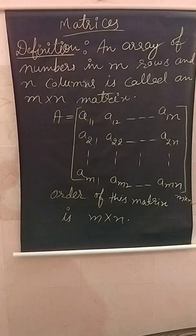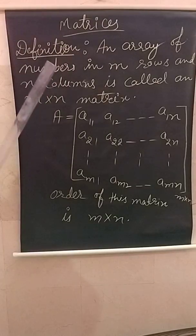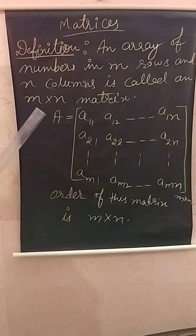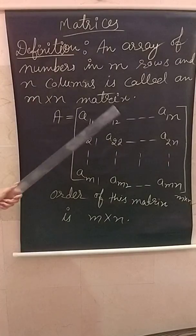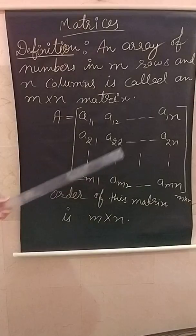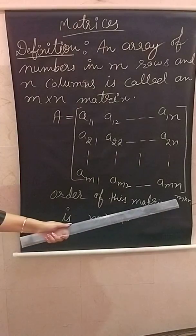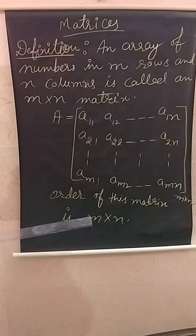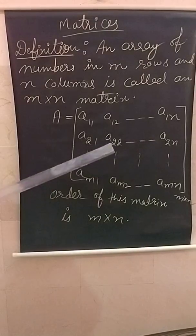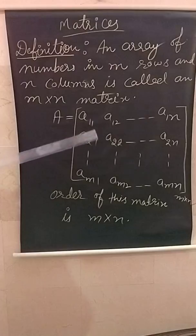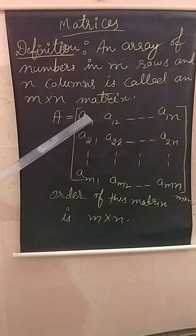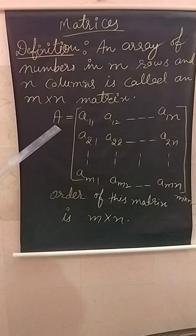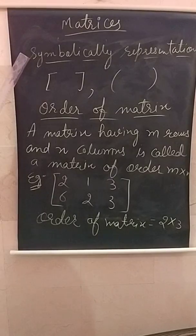We are going to do our chapter on matrices. First, the definition: an array of numbers in m rows and n columns is called an m by n matrix. A matrix can be represented in so many rows and so many columns. This is called an m by n matrix. The order of this matrix is m by n, where m means number of rows and n means number of columns. The entries are called elements, always written as small letters, and the matrix is always written as a capital letter.